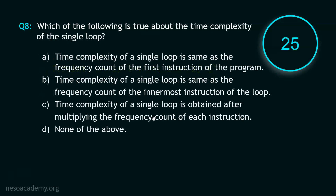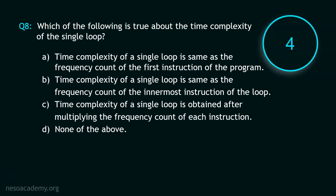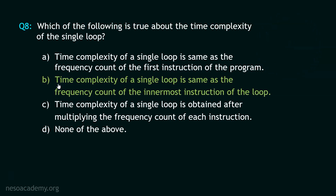Now let's move to question number 8, and your time starts now. Stop. The correct option is option B. In order to find the time complexity of a single loop, we need to calculate the frequency count of the innermost instruction of the loop. The time complexity of a single loop is the same as the frequency count of the innermost instruction.